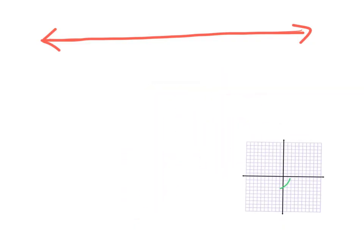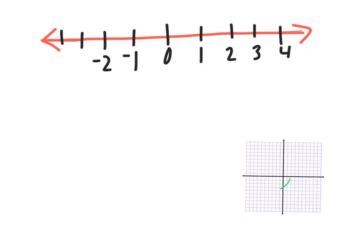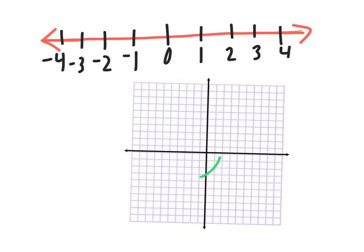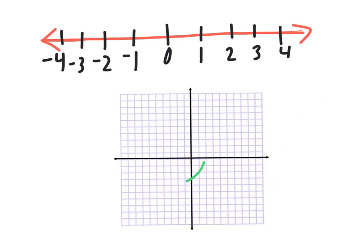Think about when we first learned how to graph on a number line. If I put zero here, when I go to the right it gets bigger: one, two, three, four. I go to the left, I count down: negative one, negative two, negative three, negative four. That is actually the same as the horizontal line on a coordinate graph — that green line I just traced is the exact same thing.